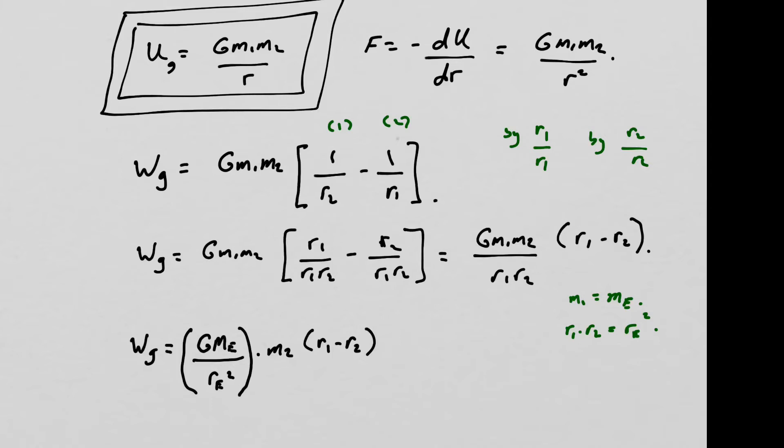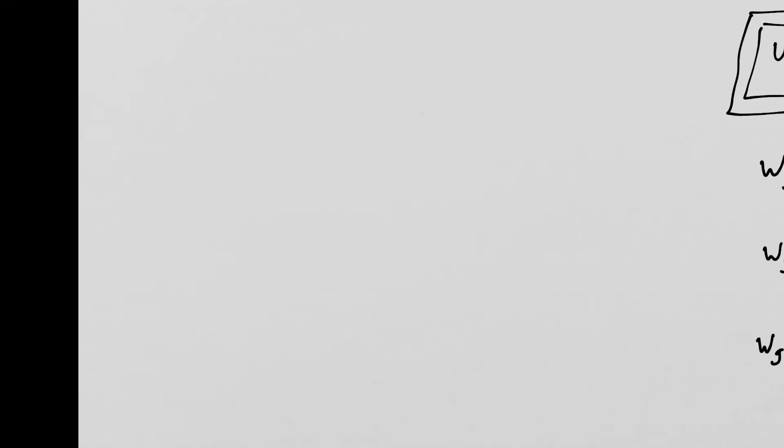And this is very powerful, because now we recognize this quantity in parentheses, this gme over re squared. Well, we've seen this in a previous lecture, that g mass of the Earth divided by the radius of the Earth squared is also known as little g, which is 9.81 meters per second squared, which means that the work done by gravity close to the Earth is nothing more than g m2 r1 minus r2. And we know that r1 minus r2 is just a delta r. But as we drew the system, it's really a change in height.